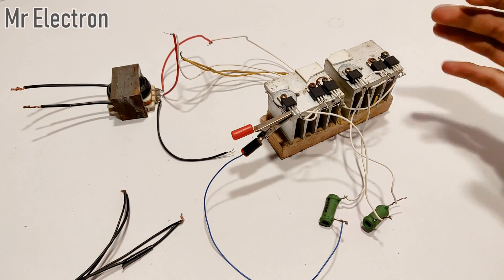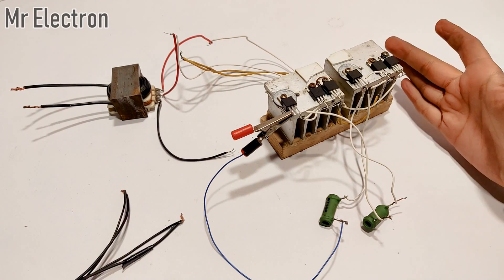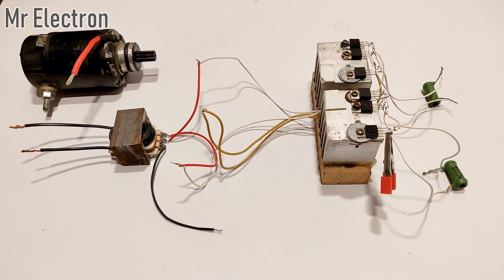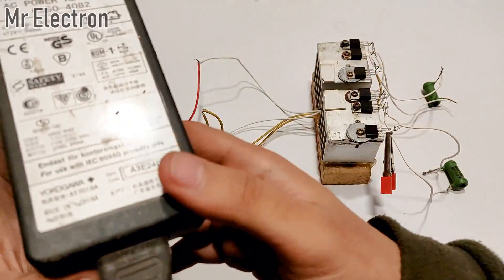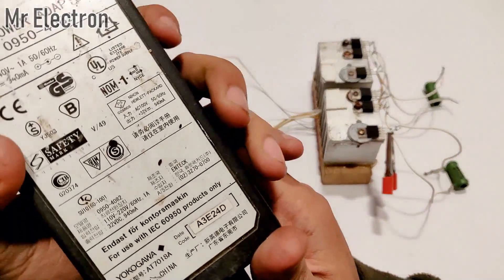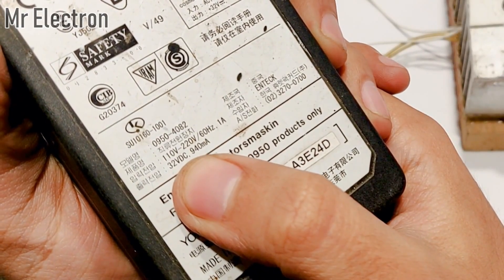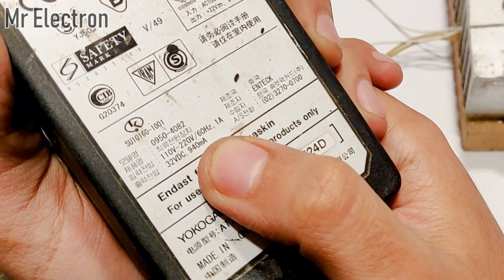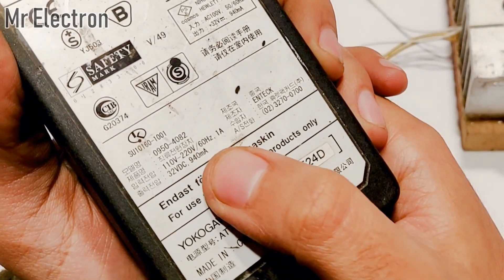Now this circuit is going to be both switching circuit as well as the oscillation circuit. Now to power up this circuit I will use two printer adapters. This is from a printer, it is a 32 volts DC supply at 940 milliamps, close to 1 ampere.